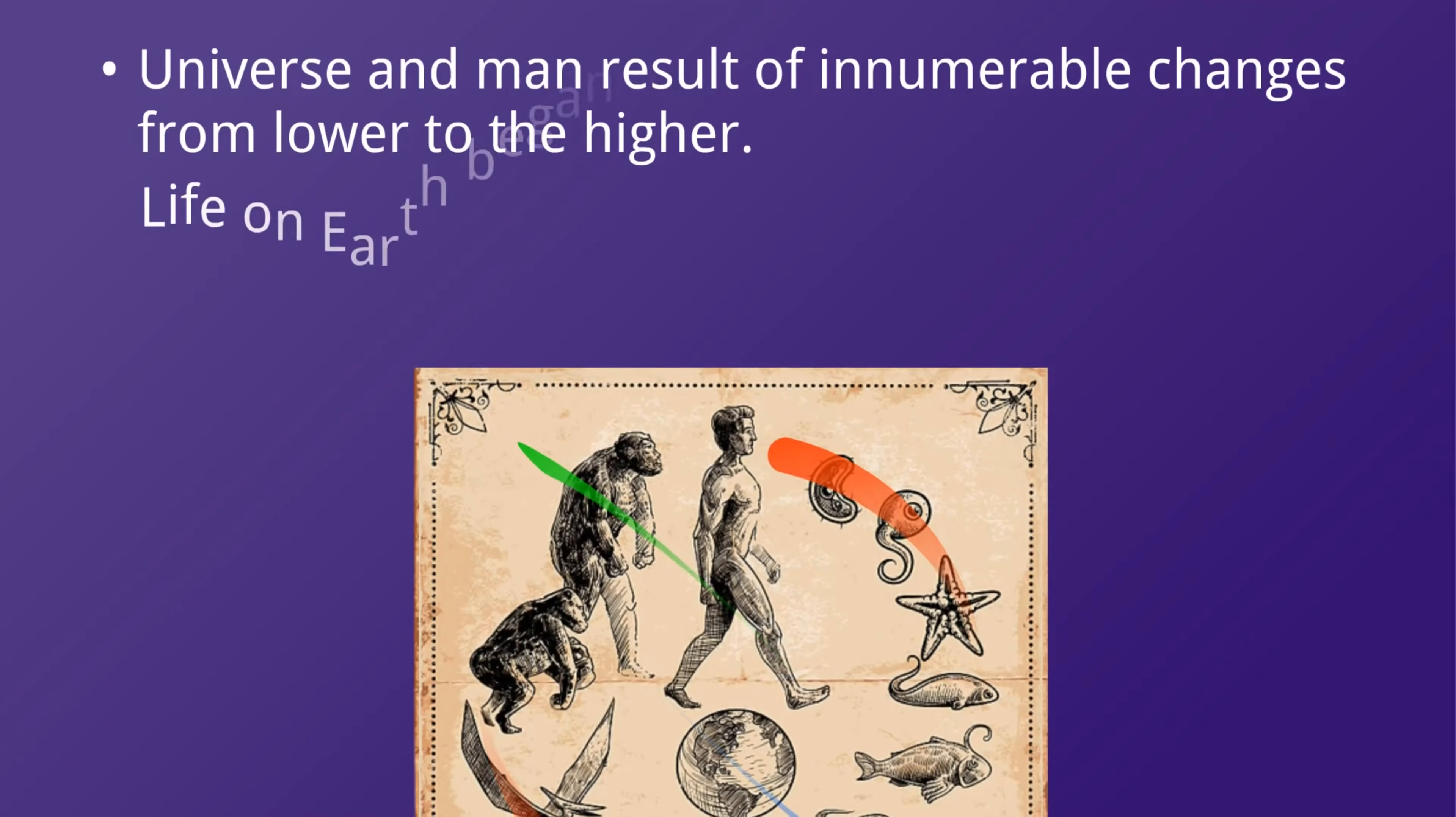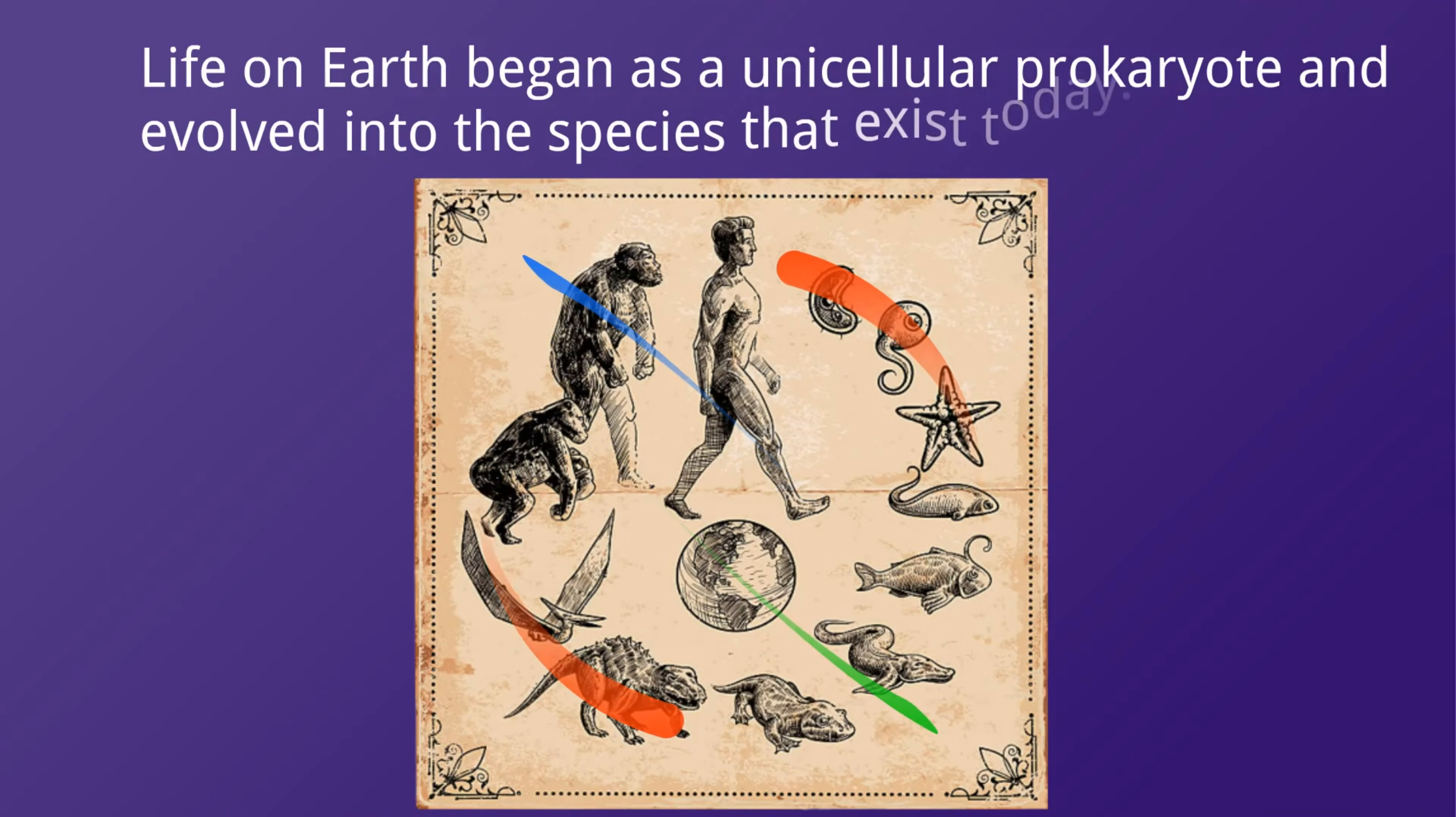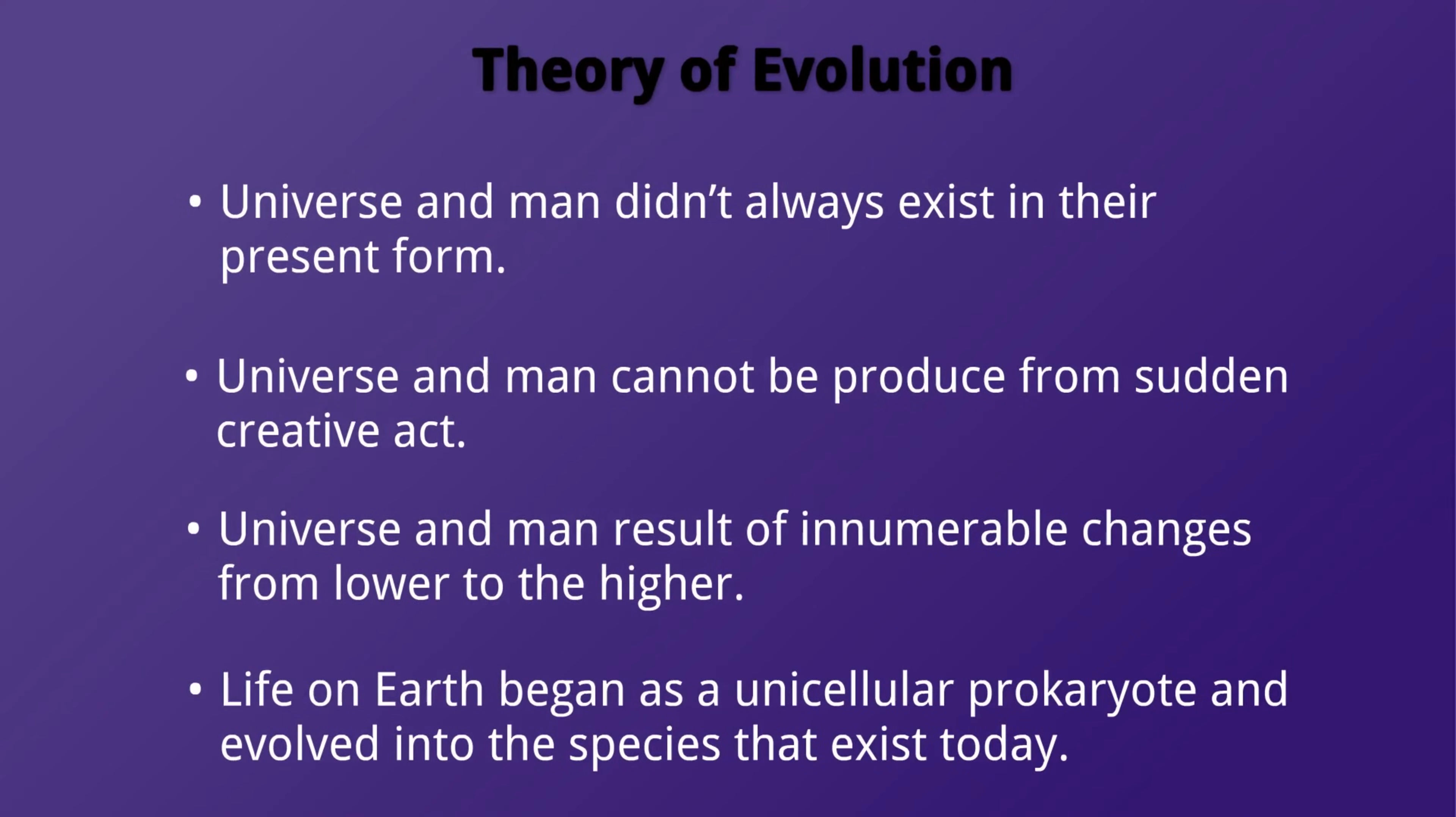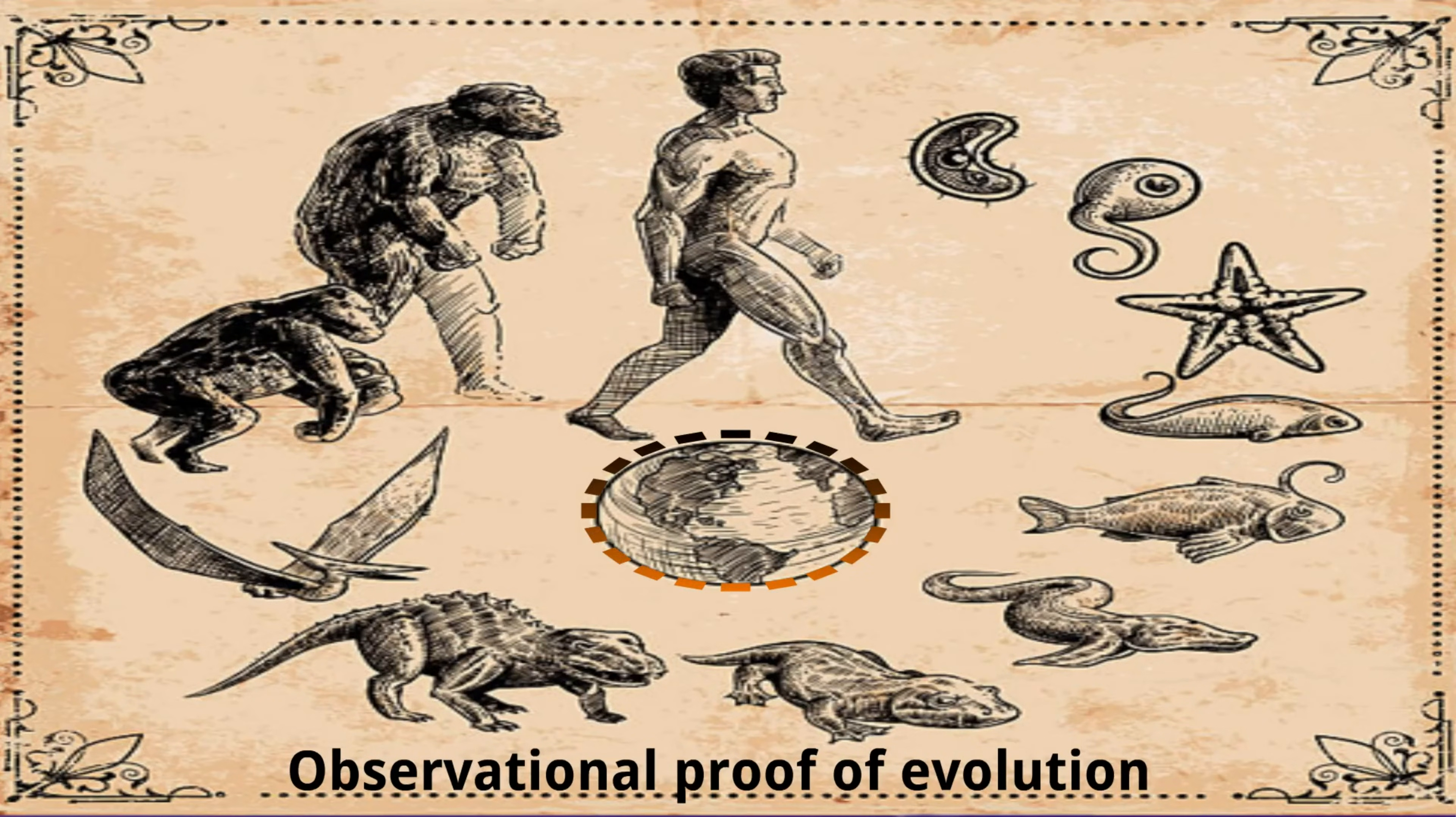According to evolutionists, life on earth emerged as a unicellular prokaryote. Then, with the passage of time, variations accumulated and new species came into existence. The current higher organizational levels are the descendants of the earliest unicellular prokaryotes that might have originated spontaneously.